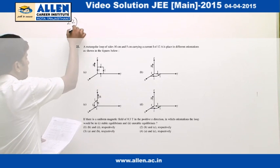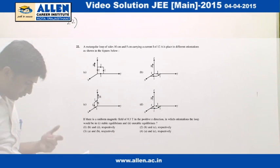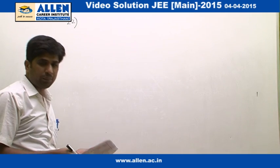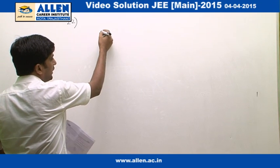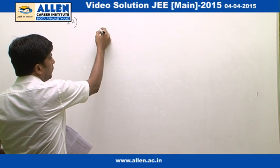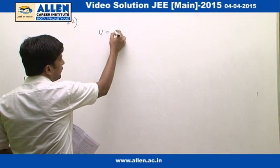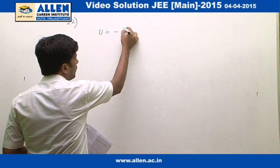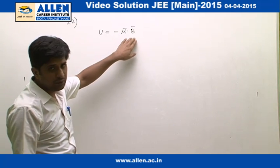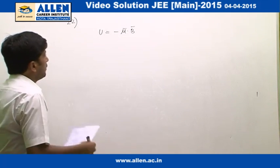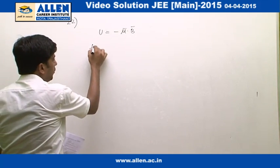As we know that potential energy of a loop kept in a magnetic field is given by minus mu dot B, where mu is magnetic moment and B is magnetic field. For stable equilibrium,